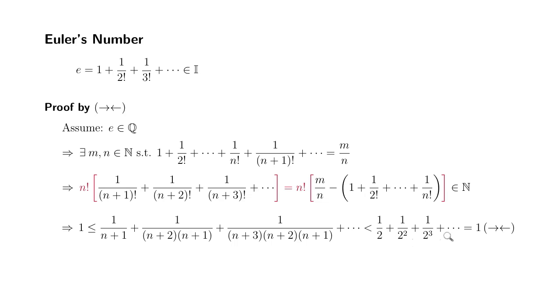But you notice that this is a simple geometric series, a being 1 over 2, r being 1 over 2. So the sum is going to be equal to 1.